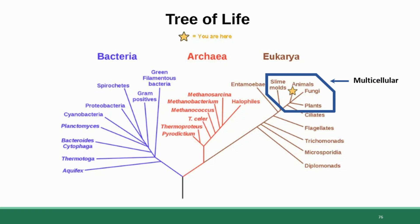These domains are distinguished from each other based on both their physical characteristics and their genetics. For example, the domains bacteria and archaea are both entirely composed of single-celled microscopic organisms. But bacteria and archaea are so different from each other on a DNA level that they are divided into two wholly separate domains in the tree of life. Within the branch eukarya, most organisms are actually single-celled as well. Only animals, fungi, plants, and — at least at some stages of their lives — slime molds are multicellular.